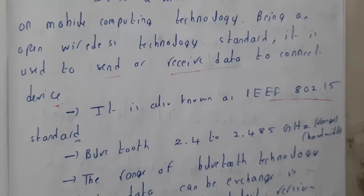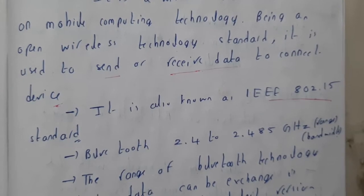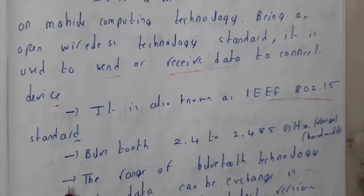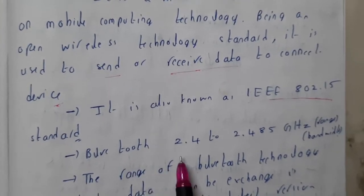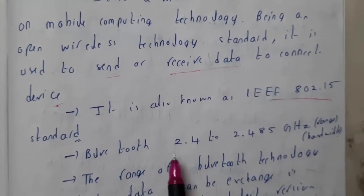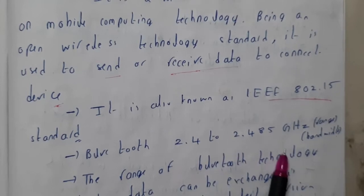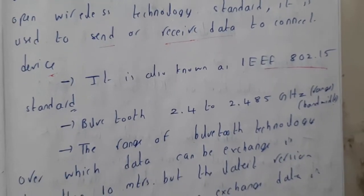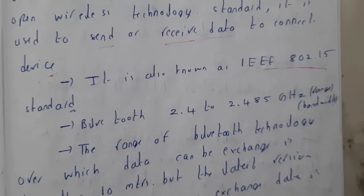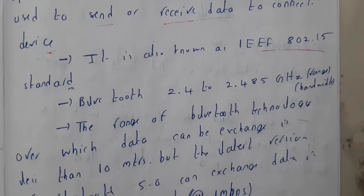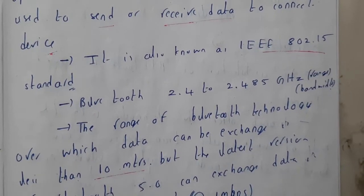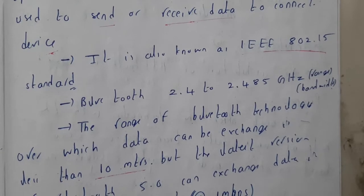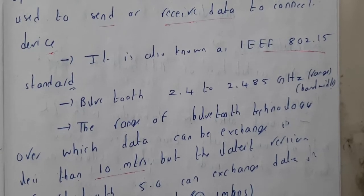Bluetooth is also called IEEE 802.15 — please remember, whenever a question is given, IEEE 802.15 refers to Bluetooth. The frequency range of Bluetooth is 2.4 to 2.485 GHz. Initially, the maximum distance between two users could only be 10 meters.